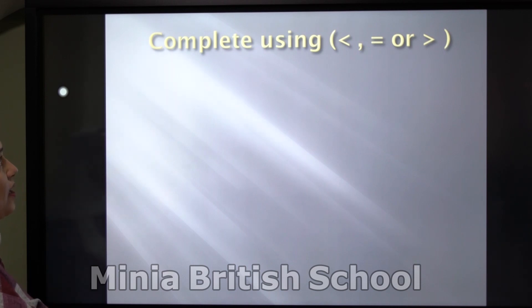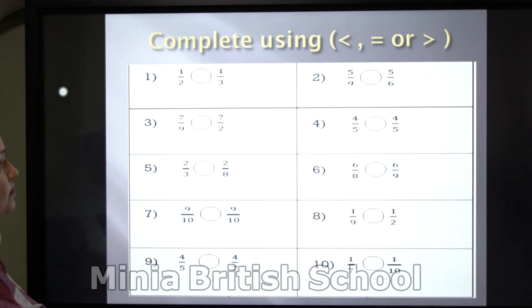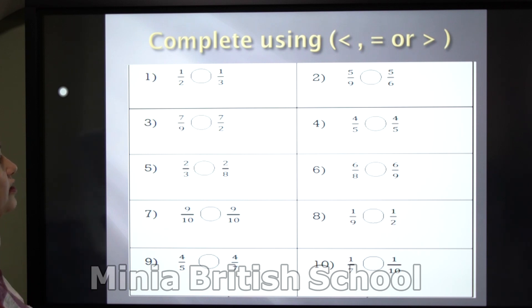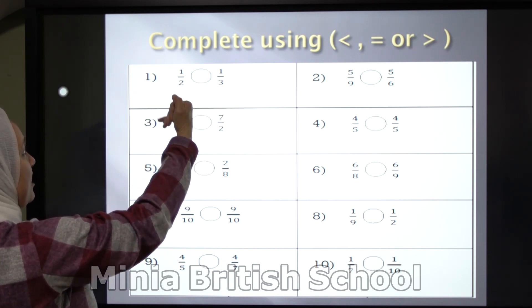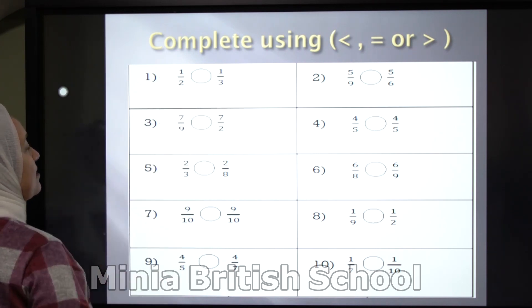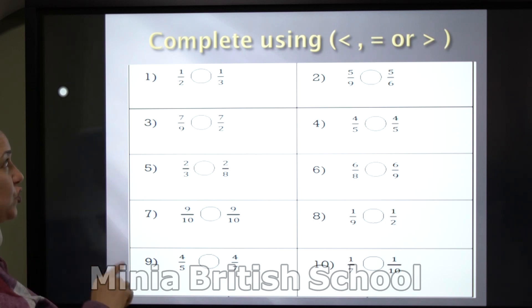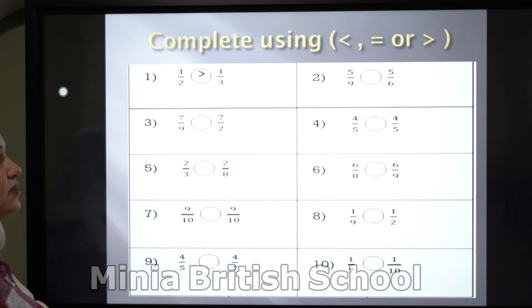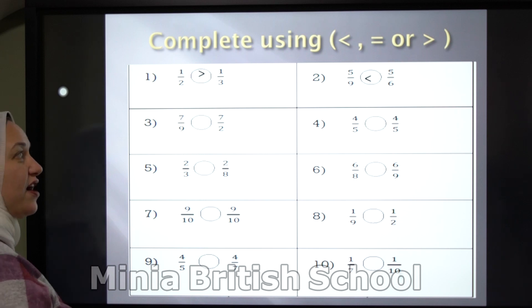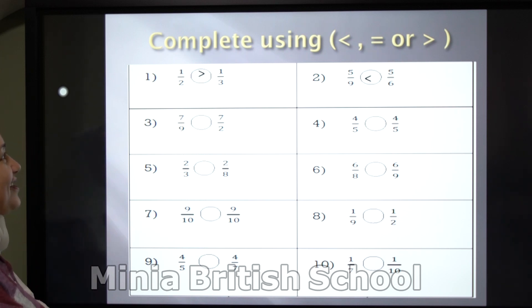Complete with me using smaller than, greater than, or equal. Number 1: 1 over 2 (half) and 1 over 3 (third) — which one is bigger? The numerators are the same: 1. In the denominators, 2 and 3 — which is the lower number? It's 2, so in the fraction, 1 over 2 is greater than 1 over 3. Exercise number 2: you have 5 over 9 and 5 over 6 — which one is greater? Yes, 5 over 6 is greater than 5 over 9.